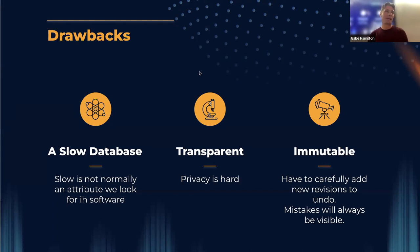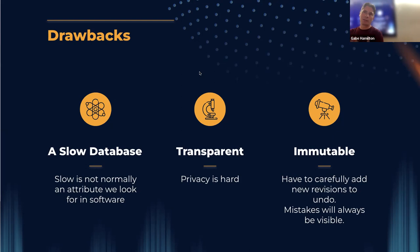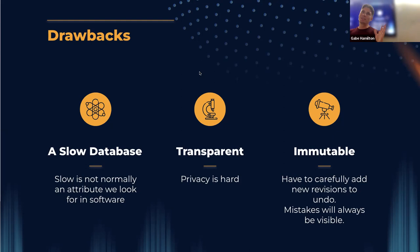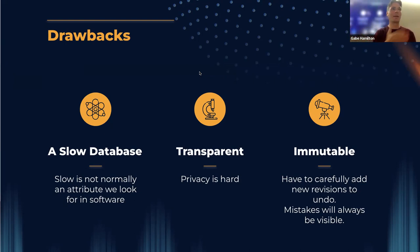Transparency is a benefit, but it can also be a huge drawback. Privacy is hard on these blockchains. People have done some really neat things with privacy, but if you want a lot of privacy for your application, you've got to think hard about that and plan for it. Just like permanent data storage is a benefit, it's also a pain as a developer — that mistake is always on the blockchain. You have to think about how to put a new transaction in that's going to undo a past mistake, while knowing that mistake is always going to be there.